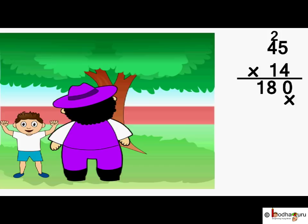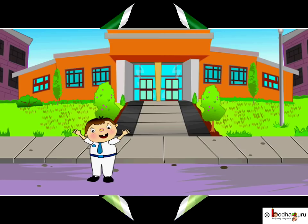Now we multiply 1 by 45. So first write 0 here, then 1 into 5 is equal to 5, 1 into 4 is equal to 4. Now let us do the sum. So 630 rupees he earned yesterday.